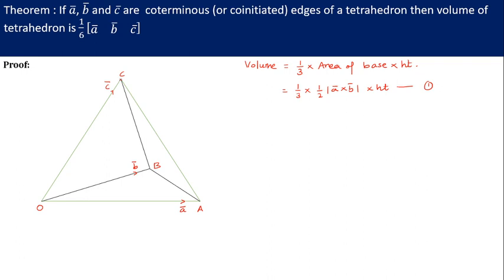For getting height I am drawing CP which is perpendicular to the base triangle. Let CP be perpendicular to triangle OAB. Further I am joining OP. So now this CP is perpendicular to OP.